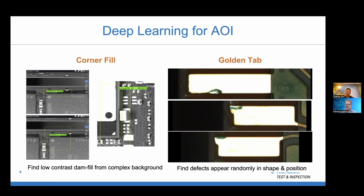On the right side is anomaly detection. We're looking at the golden fingers or golden tabs on memory modules. The challenging part is that because it's a metal surface, you have different texture backgrounds, which is usually very challenging for traditional algorithms — they can't differentiate whether it's just surface texture or a real defect. By training a specific machine learning model, we can easily solve this problem and reduce a lot of false calls without any escapes for our customers.